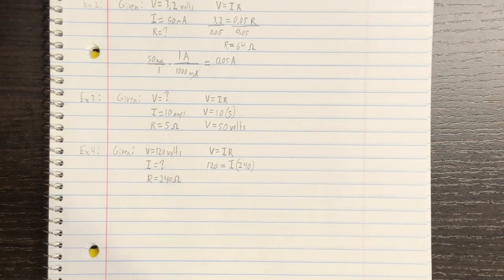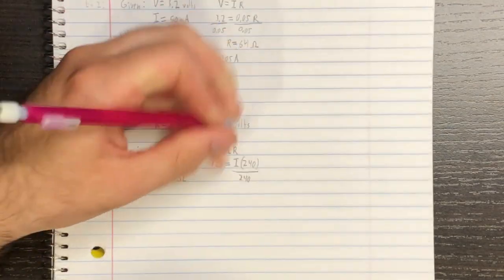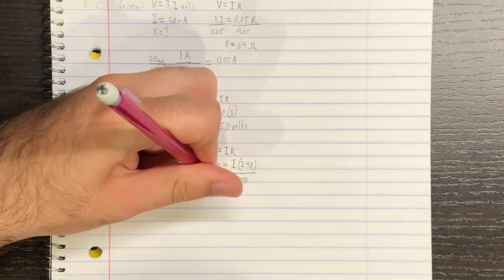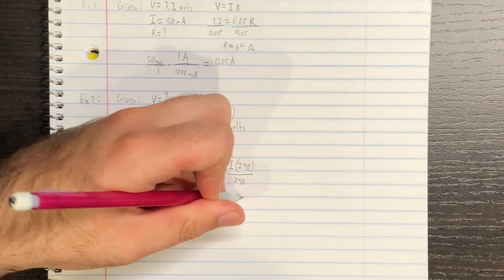And now we just need to solve for amperage. Using algebra, we're going to divide both sides by 240. And we find that the amperage is equal to 0.5 amps.